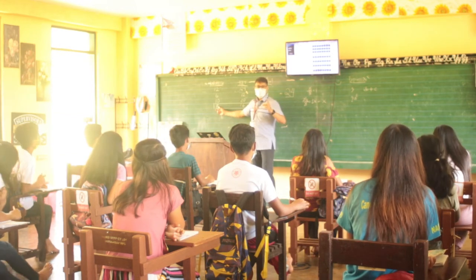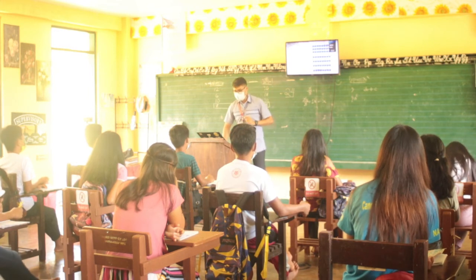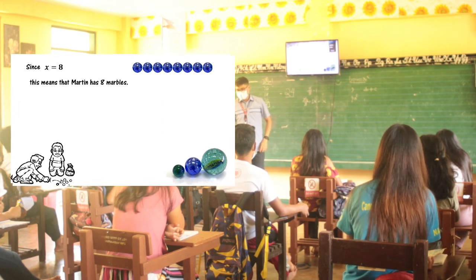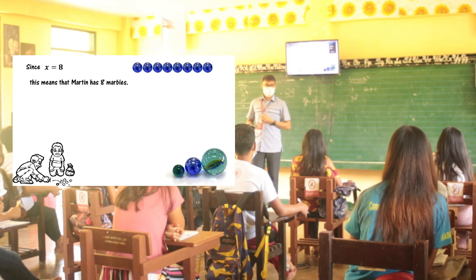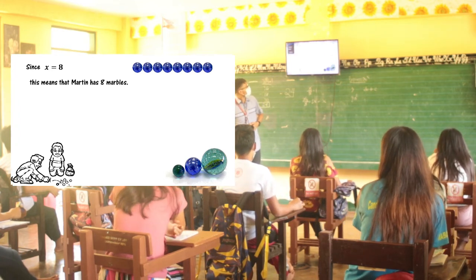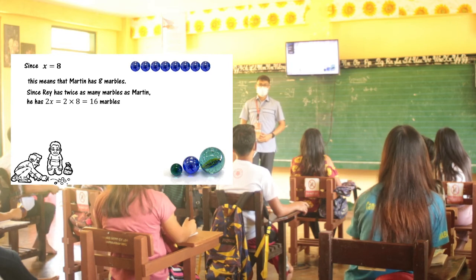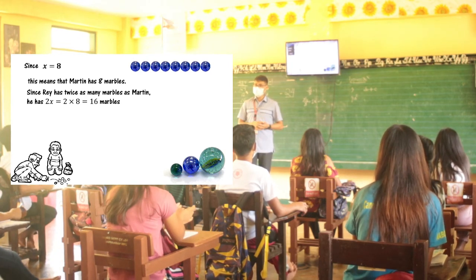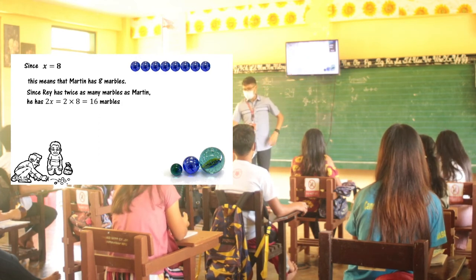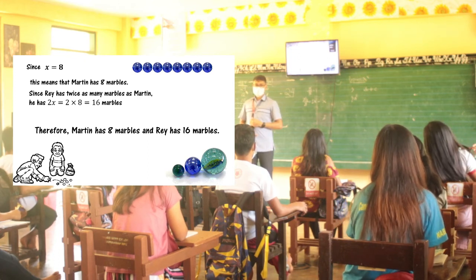Remember, who is X in this representation? X is Martin. Since X equals 8, this means Martin has 8 marbles. And since Ray has twice as many marbles as Martin, Ray has 2 times 8, which equals 16 marbles. Therefore, Martin has 8 marbles and Ray has 16 marbles.